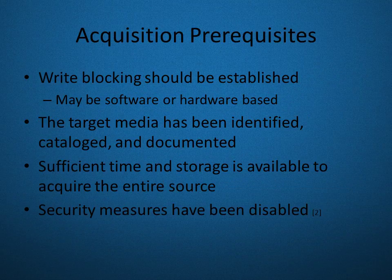Some standard prerequisites to acquiring images are that write blocking should be established — this could be software or hardware-based. Write blocking is necessary to prove that you do not make changes to the device that you are acquiring. It is important that your target or destination media has been identified, catalogued, and documented. It is also important that sufficient time and storage is available to acquire the entire source. With some systems, there may be security measures in place that might need to be disabled before you are able to do a full image.